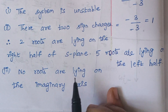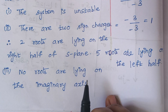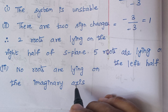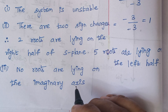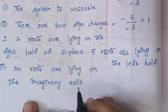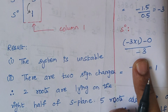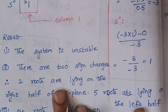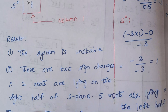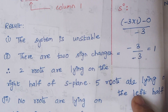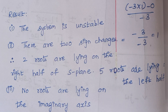The final statement: no roots are lying on the imaginary axis. We went through this step because of the row of zeros — whenever there is a row of zeros, roots may possibly be located on the imaginary axis. From the Routh stability criteria, the first column has two sign changes. Therefore two roots lie on the right half of S plane and the remaining five roots lie on the left half. Since there is a sign change, the system is unstable. Even though the system has a row of zeros, there are no roots lying on the imaginary axis.